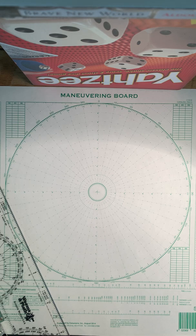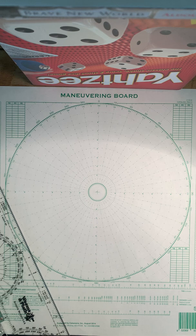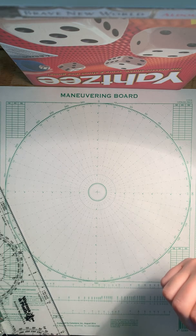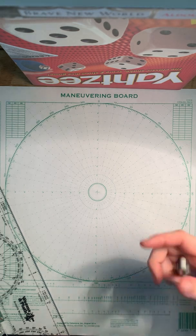Wayne E. Meyer is on course 070 true at a speed of 15 knots. Apparent wind is 150 true, which is 80 degrees relative, at 20 knots. Determine the true wind direction and the true wind speed.